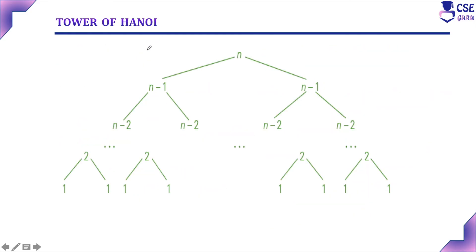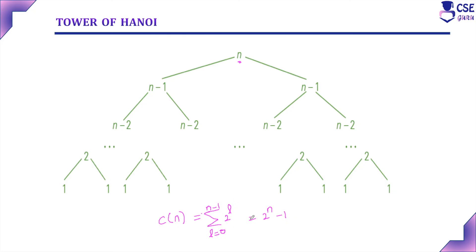For analysis purposes, we will construct the tree of recursive calls. Each node represents a recursive call. By counting the number of nodes in the tree, we can count the recursive calls. To count the number of recursive calls: C(N) = summation from L=0 to N-1 of 2^L, where L represents the level of the tree, giving 2^N - 1. This formula counts the recursive calls with the help of the N value.